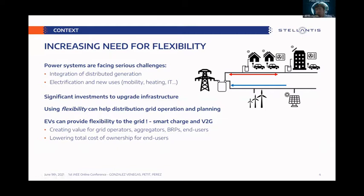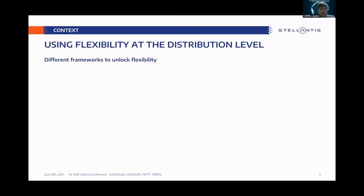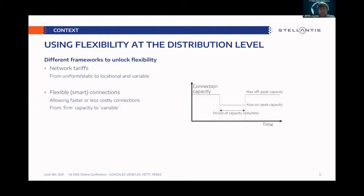Lowering the cost of ownership is really important if we want to boost the diffusion of electric vehicles. The IEA has stated we need to stop selling combustion vehicles by 2035, so there are serious challenges to boost the uptake of electric vehicles. How do we implement flexibility at the distribution level? We have different frameworks: net tariffs, capacity tariffs or peak tariffs that incentivize users to shift their consumption patterns, and smart contracts where you have a reduced capacity to take energy from the grid in constrained hours.